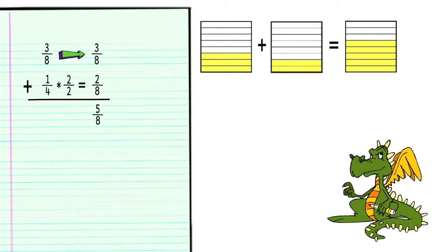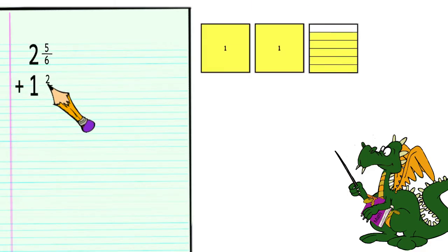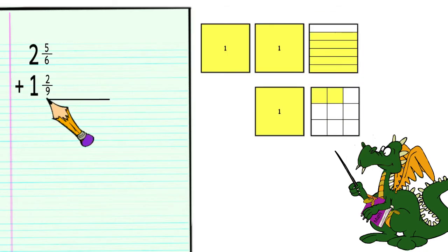In our next example, we will be working with mixed numbers and using a different way to get a common denominator. Our second problem will be 2 5 6ths plus 1 2 9ths. Again, we can see that we are not working with the same sized pieces. But in this case, neither denominator is a factor of the other.